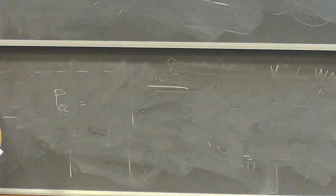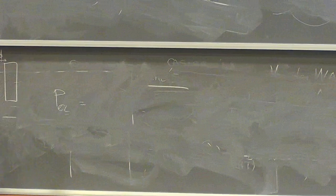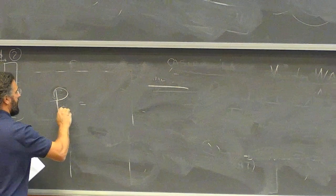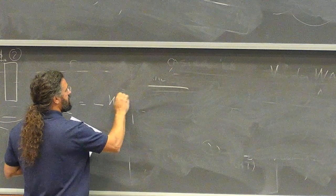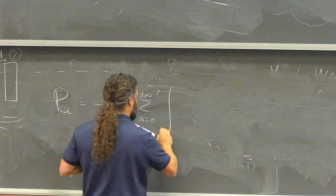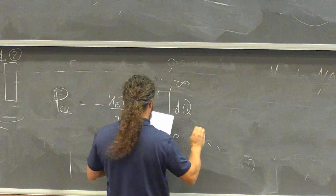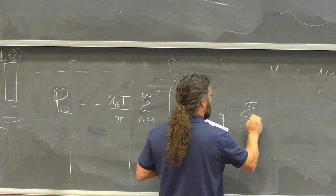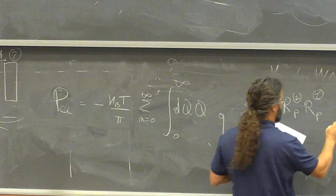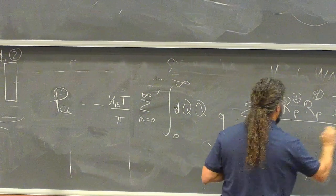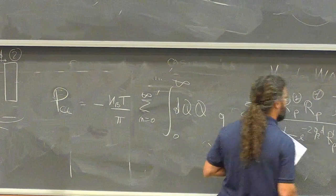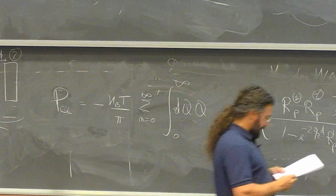The Casimir-Lifshitz pressure for two slabs separated by distance d, with object one and object two at the same temperature T, can be written as: P_CL = −(k_BT/π) × Σ'_n ∫₀^∞ dq · q · q_z × Σ_pol r_{1p} r_{2p} × e^{−2q_z d} / [1 − e^{−2q_z d} r_{1p} r_{2p}], where the sum over n goes from 0 (with a prime meaning n=0 counted with weight 1/2) to infinity.